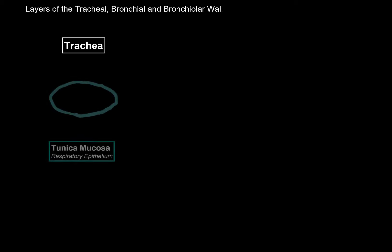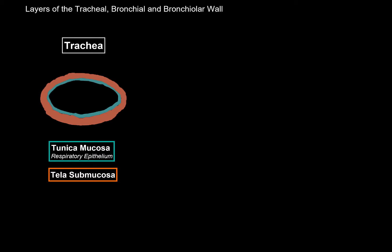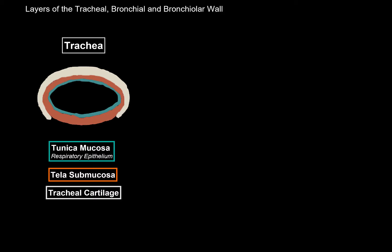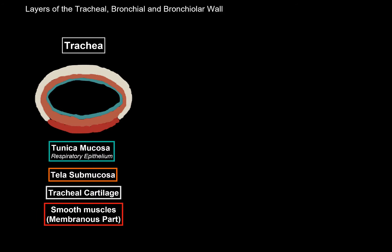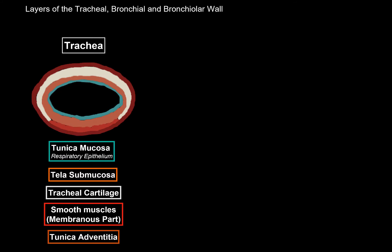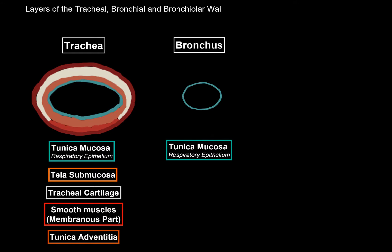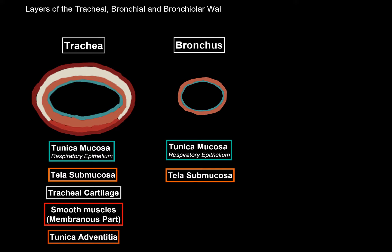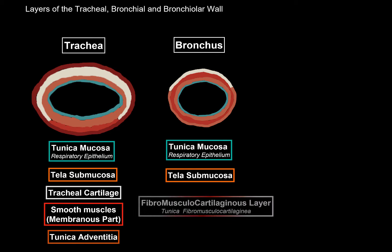Now let's go ahead and compare the layers of the tracheal, bronchial, and bronchiolar wall. Starting with the trachea: the inner layer is the tunica mucosa, lined by respiratory epithelium. Then you have the Tela Submucosa with a lot of loose connective tissue. Then there's a horseshoe-shaped tracheal cartilage with smooth muscles on the backside called the membranous part of the trachea. And then they're all protected by a layer of tunica adventitia. As we look at the bronchus, we also have the tunica mucosa on the inside lined by respiratory epithelium, since it's part of the conductive airways. Underneath, we have loose connective tissue called the Tela Submucosa. Then externally, the muscle layer, cartilage, and fibrous layer blend into each other into a layer called the fibromusculocartilaginous layer.